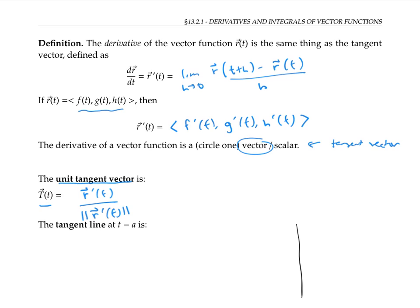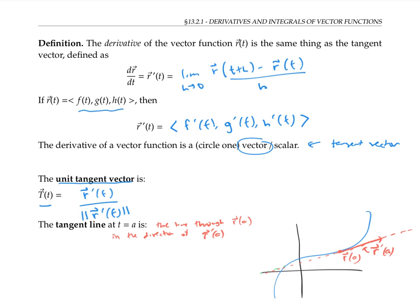Once we have a tangent vector, it's not too hard to find a tangent line. The tangent line is going to be the line that goes through the point r of a in the direction of the tangent vector. If the vector function r of t is given in components, then the point r of a can be described in terms of those components at a, and the tangent vector r prime of a can also be described in terms of the derivatives of those components at a.